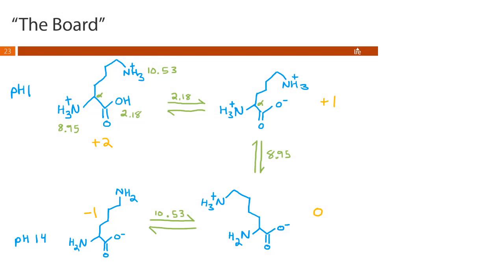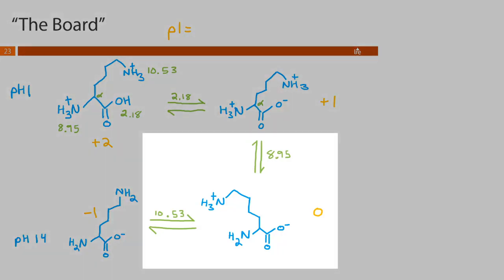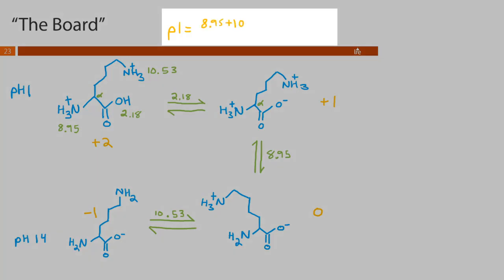Okay so to calculate our pI, our isoelectric point, it's going to be the average of the two pKa's on each side of our neutrally charged species. So we've got 8.95 plus 10.53 divided by 2 and if you haven't already go ahead and pause the video and see what answer you get. It looks like I get 9.74.